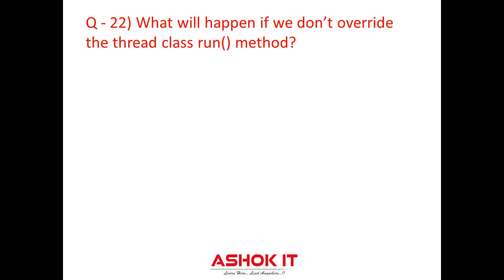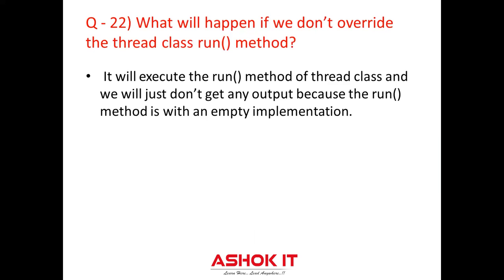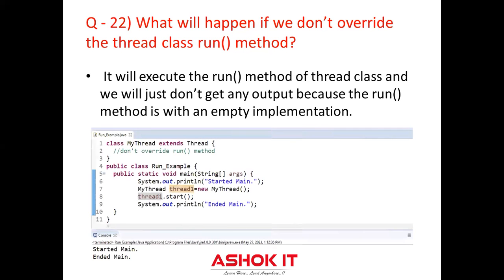Question twenty-two: What will happen if you don't override the Thread class run method? Nothing will happen as such. If you don't override the run method, the compiler will not show an error. It will execute the run method of the Thread class and you will just get no output, because the Thread class run method has an empty implementation.